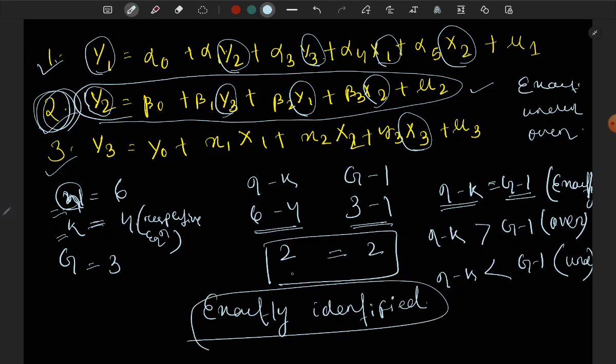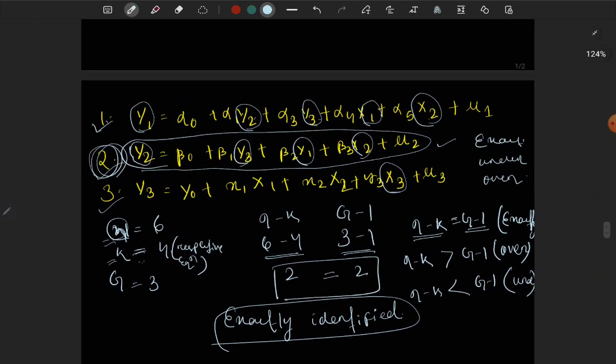If we were asked about equation 1 instead, we would count the variables the same way - 1, 2, 3, 4, 5 - so k would be 5 variables since equation number 1 is being asked. The other two values, n and g, would remain the same.